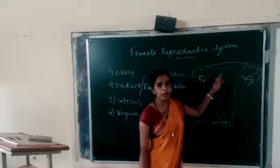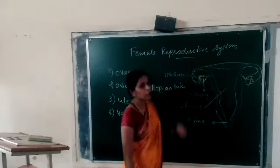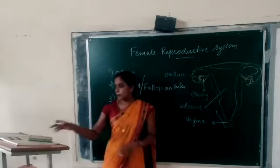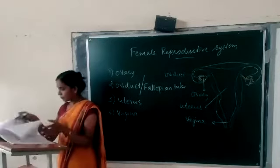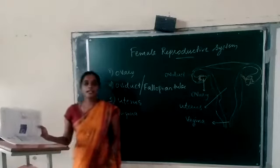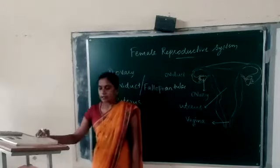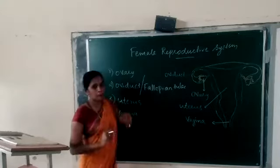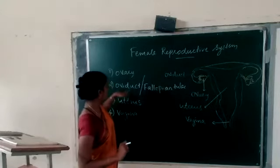You can see a figure showing the female reproductive system. In your textbook, page number 30, figure 3.4 — please look at that figure. That is the figure showing the female reproductive system, and you can see these parts.